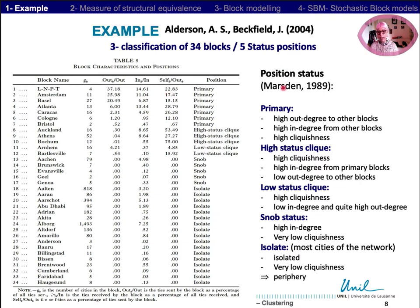They assign position status according to the typology proposed by Martsen. The primary position corresponds to cities with a high level of relations with outsiders. The high-status clique has a lower out-degree to other blocks. The low-status clique has a quite high out-degree but a low in-degree. The SNOB status has a high in-degree and very low cliquishness.